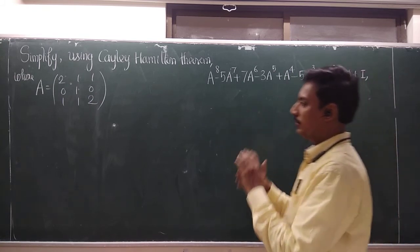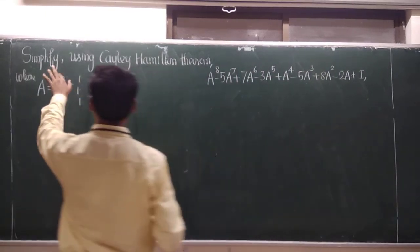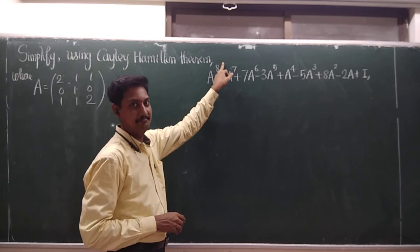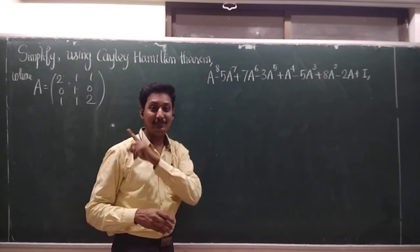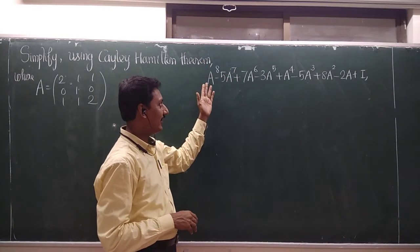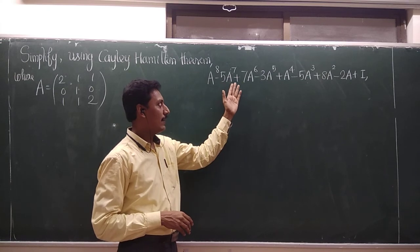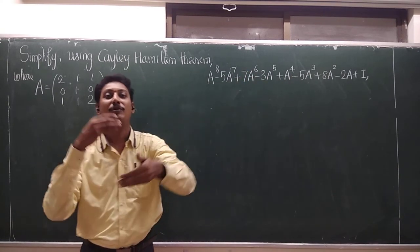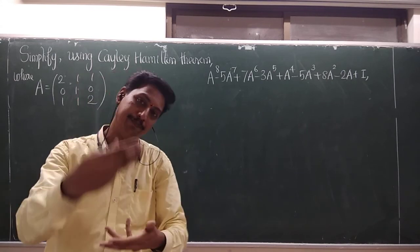Here is a 3 by 3 matrix. Simplify using Cayley-Hamilton theorem, A to the power 8. A to the power 8, A is of 3 by 3 matrix. A to the power 8 minus 5A power 7 plus 7A power 6 minus 3A power 5, etc. So simplify the matrix expression or find the value.